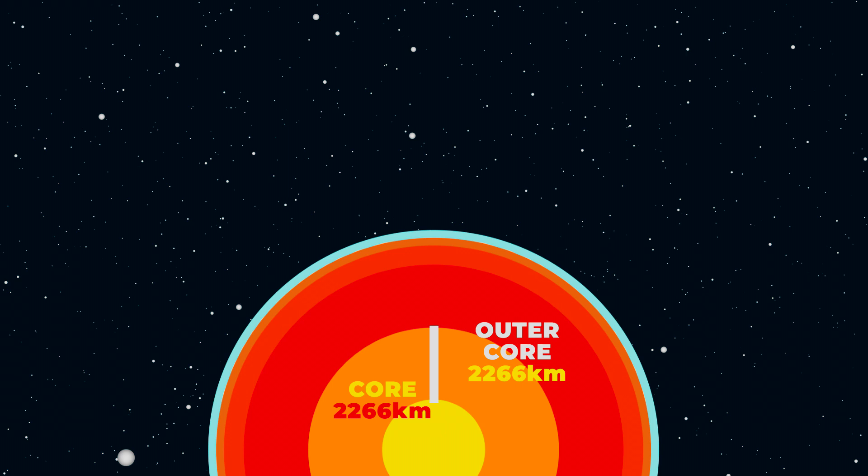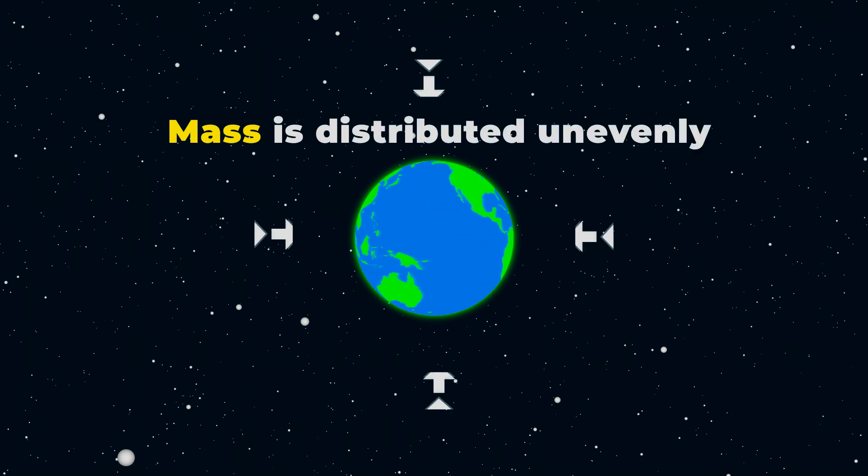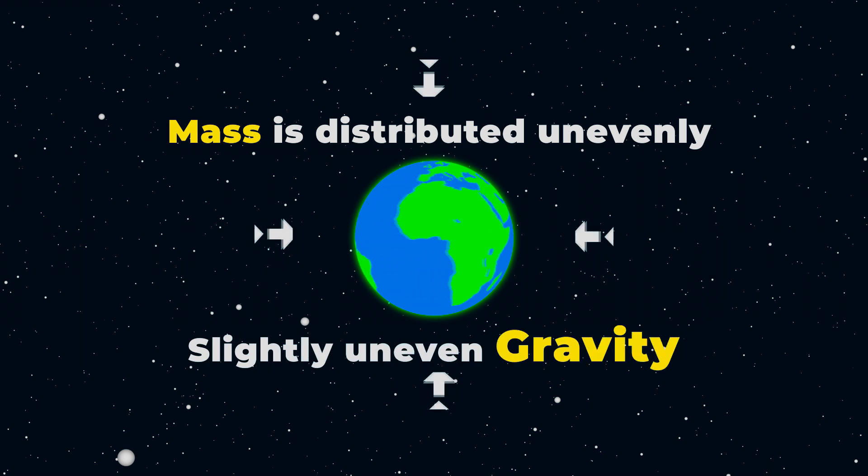Surprisingly, the iron and the nickel here are the most solid because of the very high pressure. The pressure in the inner core is estimated to be 330 to 360 gigapascals. Earth's mass is distributed unevenly and this difference of distribution leads to slightly uneven gravity and makes lighter difference of gravity in each region.